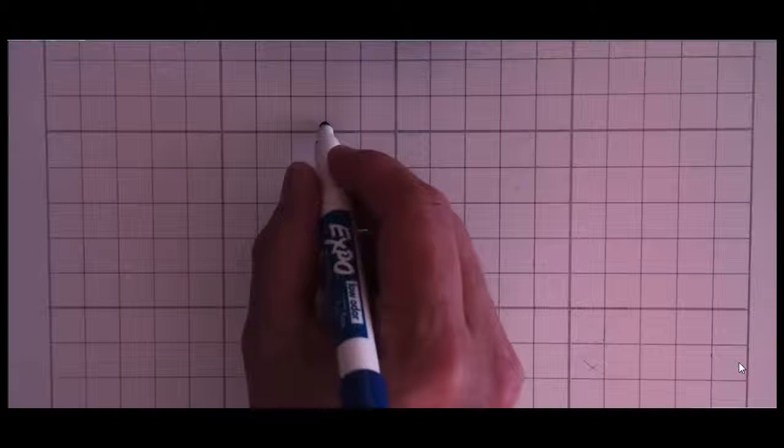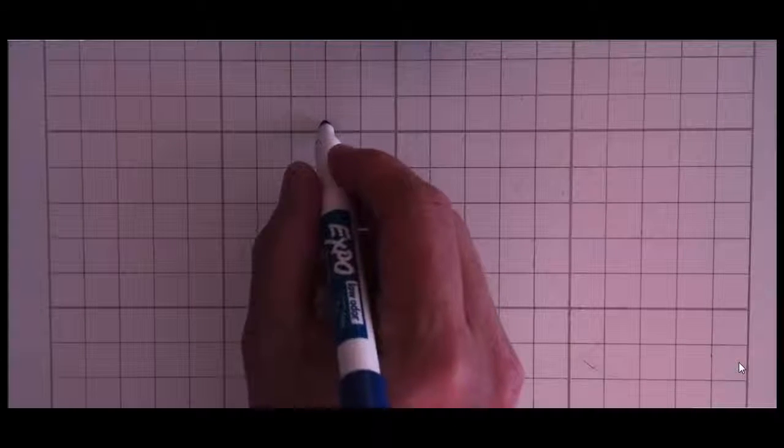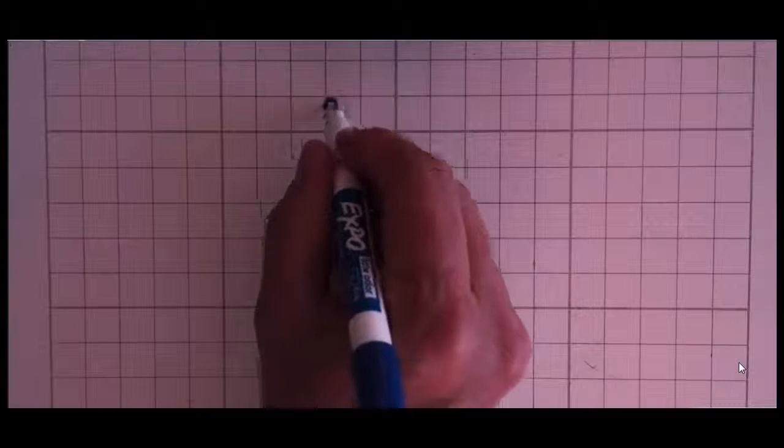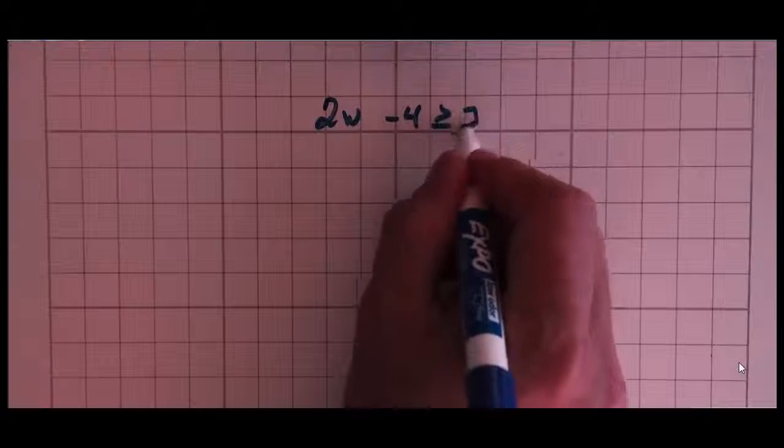An inequality is simply an equation that has a greater than or less than sign. It could be greater than or equal to or less than or equal to also. It's going to look something like this: 4w minus 4 is greater than or equal to 2.